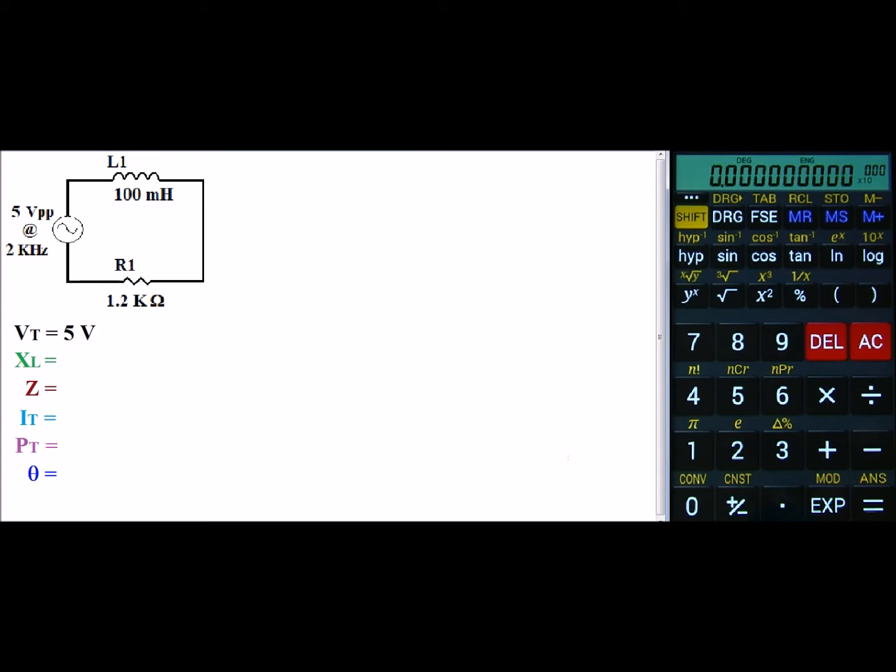My inductive reactance, the apparent resistance of the inductor at this frequency, can be found as a formula of 2 times pi times F times L. That's 2 times 3.14 times 2k times 100 milli.